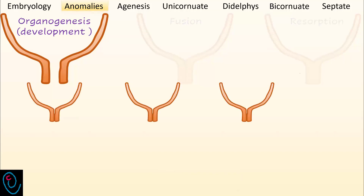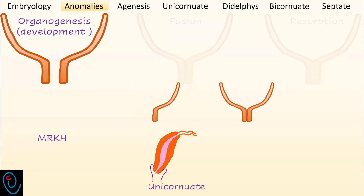Regarding organogenesis problems, failure of formation of both Müllerian ducts results in uterine agenesis or hypoplasia. In its complete form, it is known as Müllerian agenesis, or Mayer-Rokitansky-Küster-Hauser syndrome, shortly known as MRKH. Failure of formation of one Müllerian duct results in a unicornuate uterus, while hypoplasia of one duct results in a unicornuate uterus with a rudimentary horn.